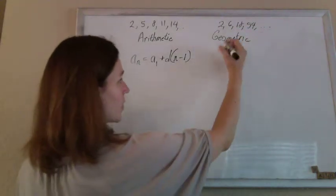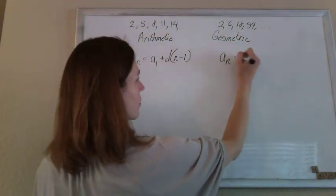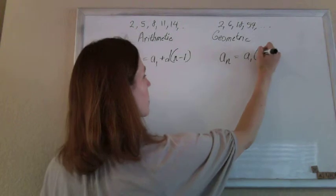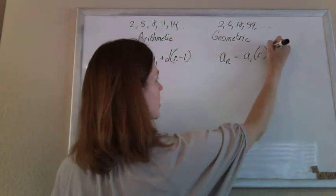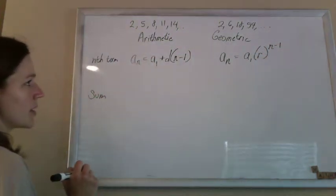And for geometric, same idea, you can get any term by taking your first term and multiplying by your common ratio n minus 1 times.